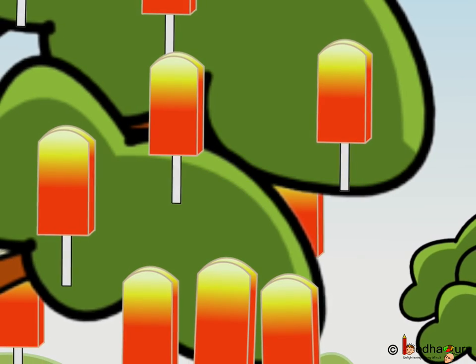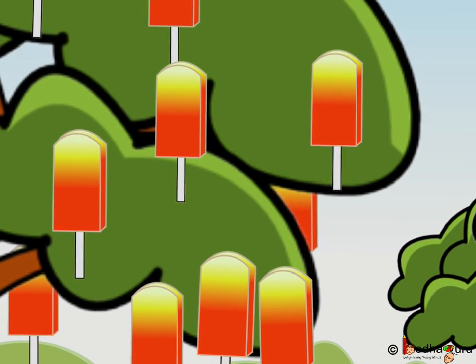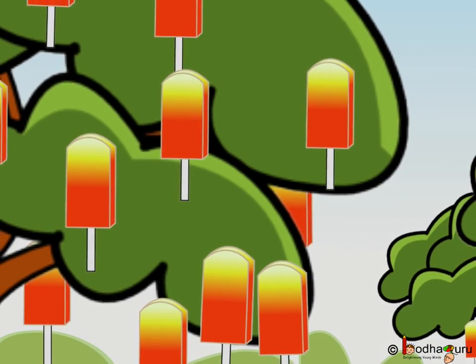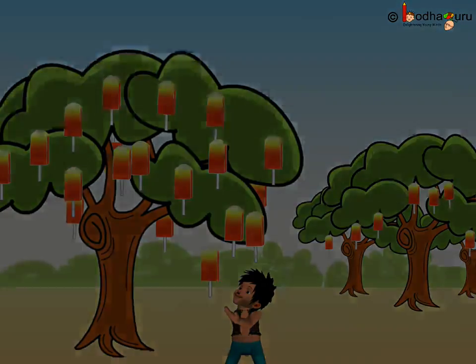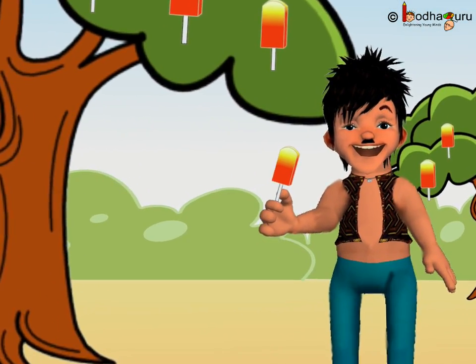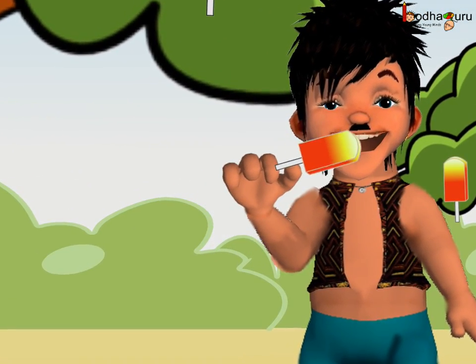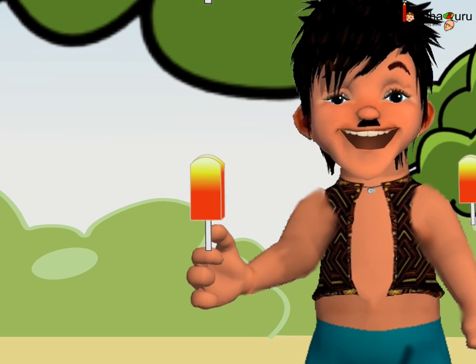Immediately, his wish was fulfilled as an orange bar dropped in his hands. He enjoyed eating it. Bholla got one orange bar.